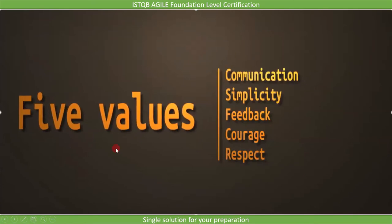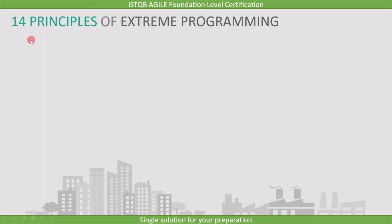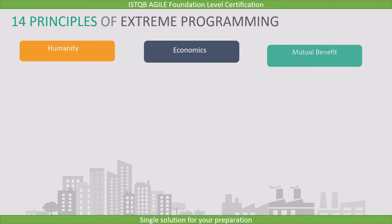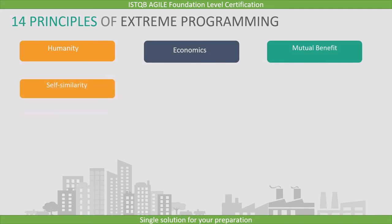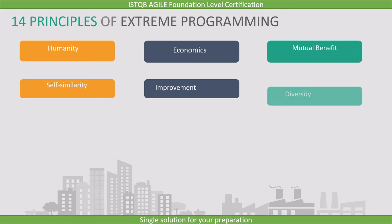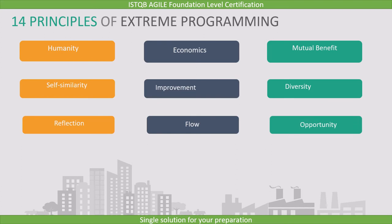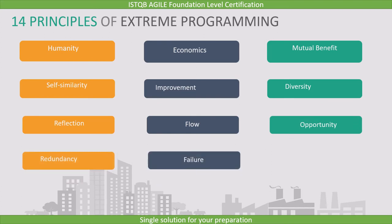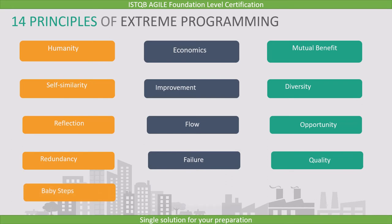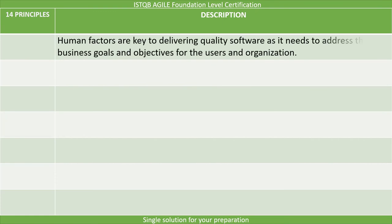That covers the five values of Extreme Programming used to guide development. Now let's see the 14 principles of Extreme Programming, which provide additional guidelines. They are: humanity, economics, mutual benefit, self-similarity, improvement, diversity, reflection, flow, opportunity, redundancy, failure, quality, baby steps, and accepted responsibility.